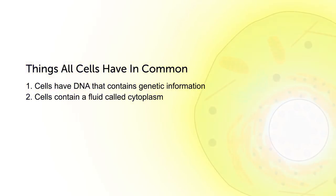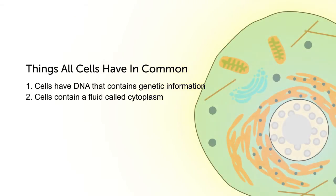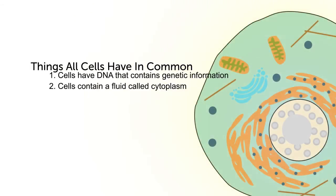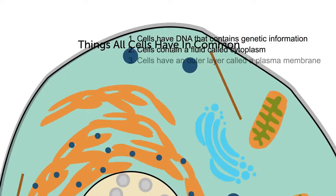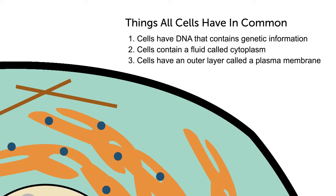The cytoplasm is everything inside the cell between the outer plasma membrane to the innermost structure, the nucleus. 3. Cells have a plasma membrane that protects and contains all the contents inside the cell.